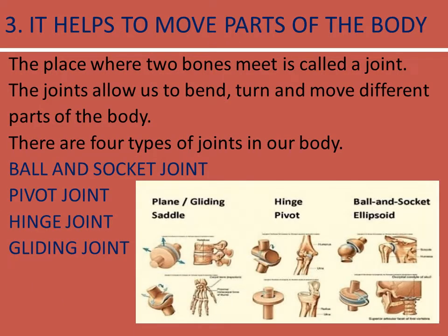The skeletal system helps to move parts of the body. The place where two bones meet is called a joint. Joints allow us to bend, turn and move different parts of the body. There are four types of joints in our body: ball and socket joint, pivot joint, hinge joint, and gliding joint.